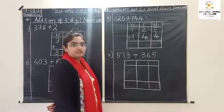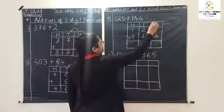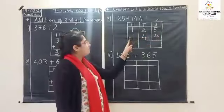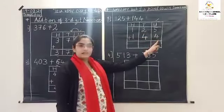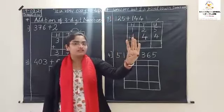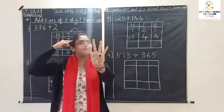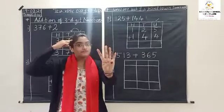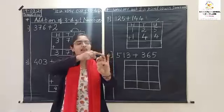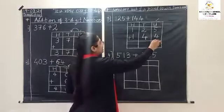Now do the addition. Always start with units place. See the number in units place: five plus four. Keep five in mind, remove four fingers. After five: six, seven, eight, nine. So the answer is nine.